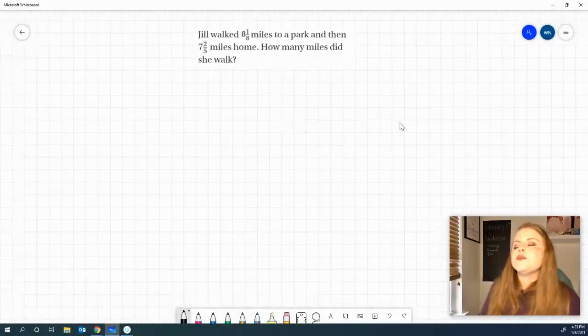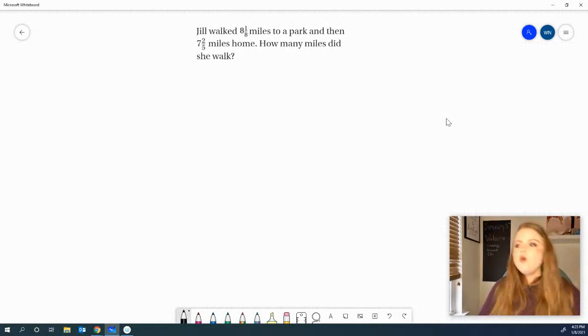And let's do a word problem. Jill walked 8 1/8th mile to a park, then 7 2/5ths miles home. How many miles did she walk? I'm curious where she started because she couldn't have started at home. Go ahead and work it out. For this one, what I like to do first is always to write the equation that the problem is trying to get you to do.